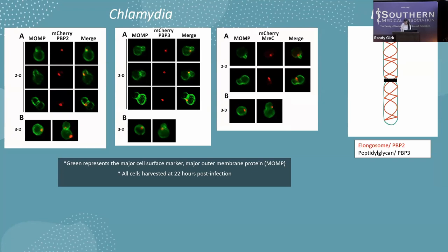This localization pattern made us wonder how the proteins in this spot are regulated and maintained, which prompted us to investigate MreC. MreC is a protein known to regulate and organize PBP2 and shares the same localization pattern as PBP2 in other bacteria. So we prepared a mCherry fusion version of MreC to assess whether the same localization pattern held true in chlamydia. Here in the third figure you can see that MreC is also located at the septum, which leads us to believe that PBP2, PBP3, and MreC possibly interact and form a complex that mediates chlamydial cell division.